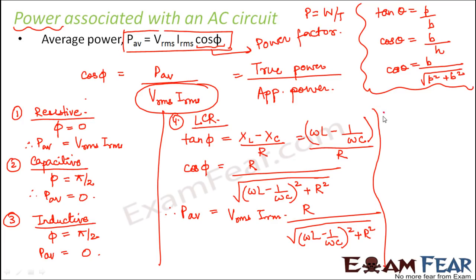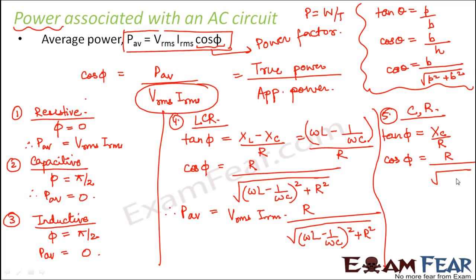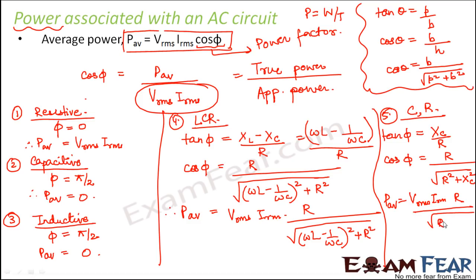For a circuit with only a capacitor and resistor — a CR circuit — there is no X_L since there is no inductor. So tan φ = X_C / R, and therefore cos φ = R / √(R² + X_C²). Thus P_average = V_rms × I_rms × R / √(R² + 1/ω²C²). In this fashion, we can calculate power for any alternating current circuit depending on the elements present.